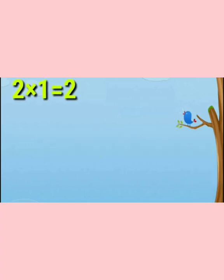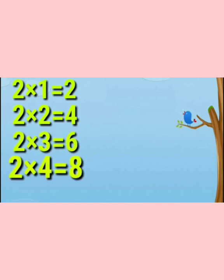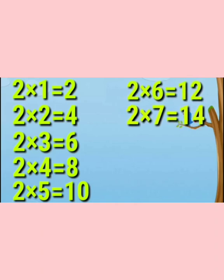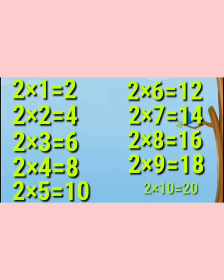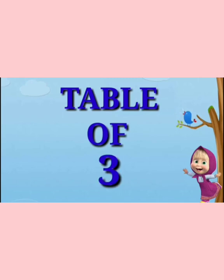Now again repeat: 2 ones are 2, 2 twos are 4, 2 threes are 6, 2 fours are 8, 2 fives are 10, 2 sixes are 12, 2 sevens are 14, 2 eights are 16, 2 nines are 18, 2 tens are 20. Now next is table of 3.